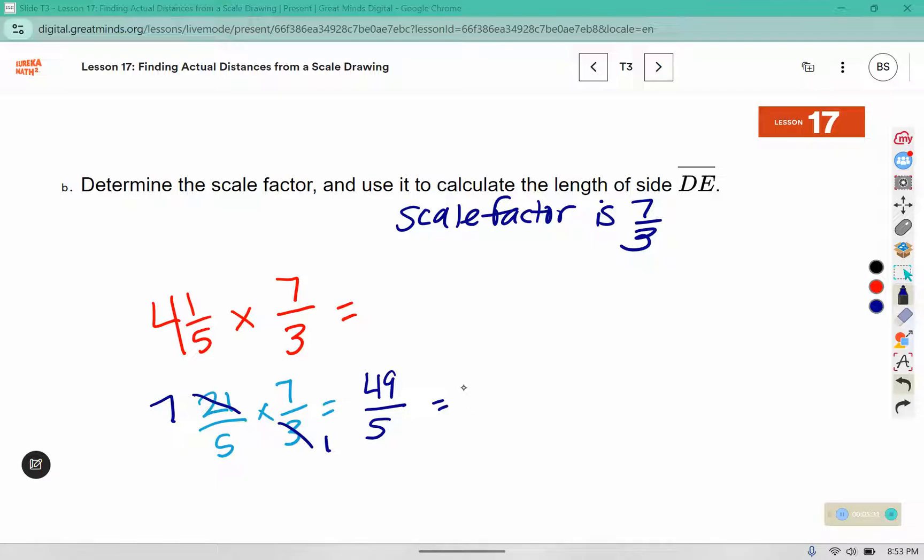5 fits into 49 nine times because 9 times 5 is 45. 45 plus 4 would get me to 49, so this is 9 and 4 fifths. We weren't given any units like inches or centimeters, so we are just going to write 9 and 4 fifths units.